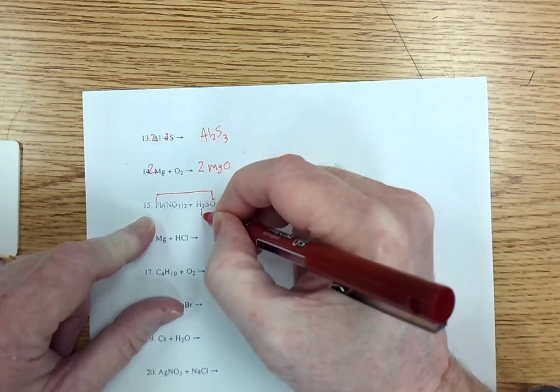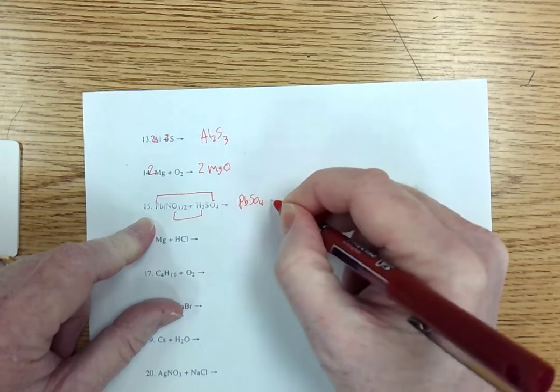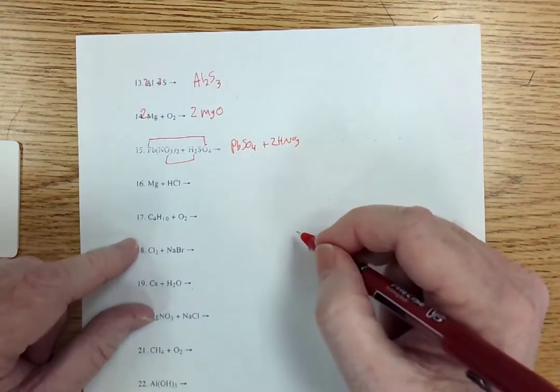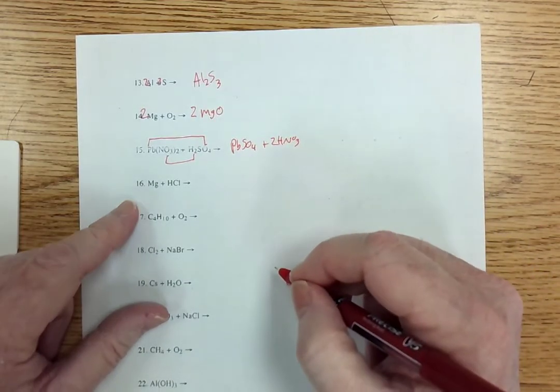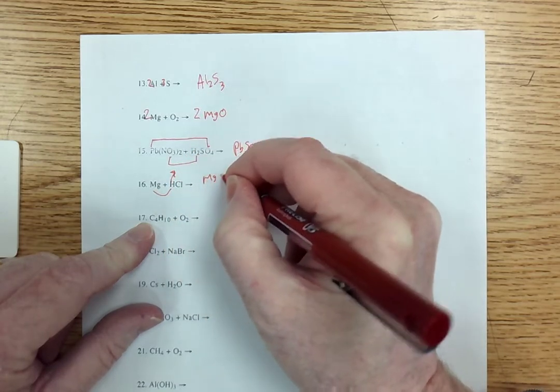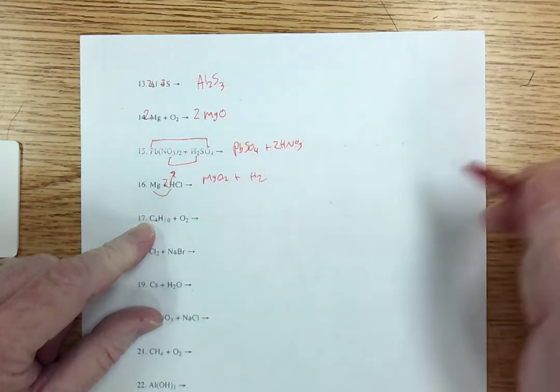Lead's going to hook up with the sulfate. Hydrogen with the nitrate. PbSO4 plus HNO3. Going to put a two in front of that. Sixteen is a single replacement. Magnesium is going to kick out the hydrogen. MgCl2 plus H2. Put a two in front of that.